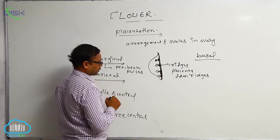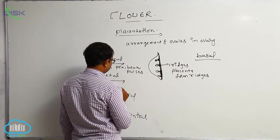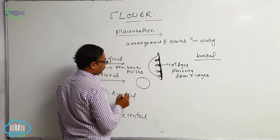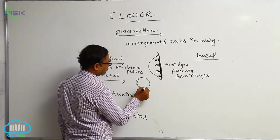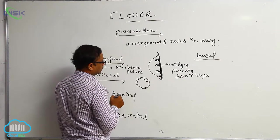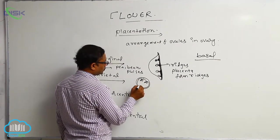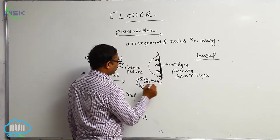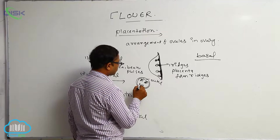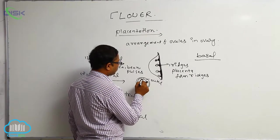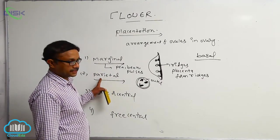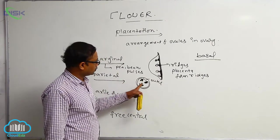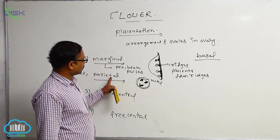In Parietal Placentation, the ovary has an outer wall and an inner wall. Ovules are connected to the inner walls of the ovary. The placenta forms at the inner walls of the ovary, and ovules are connected to those inner walls. This is known as parietal placentation.